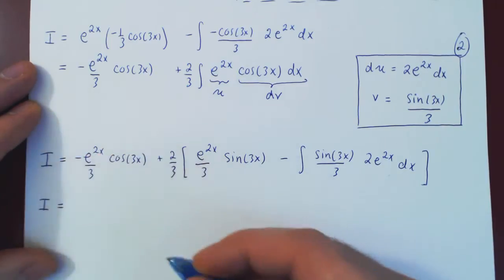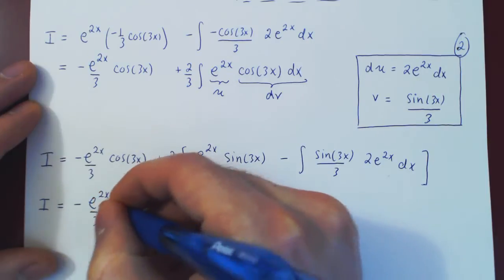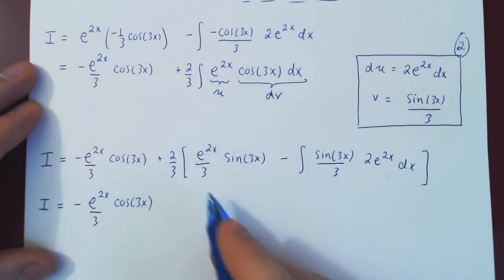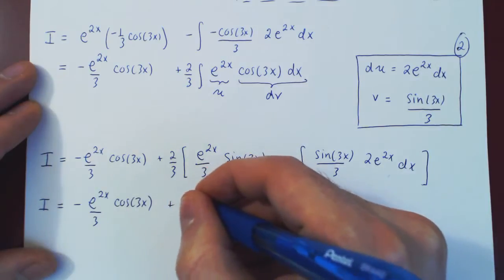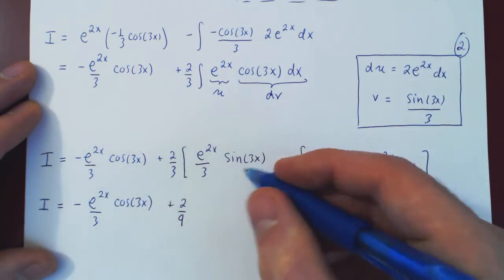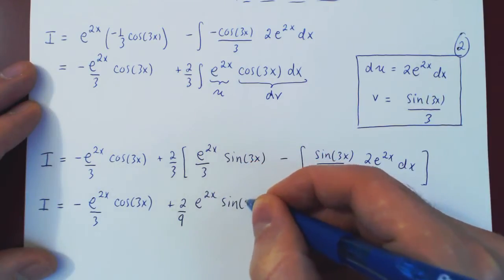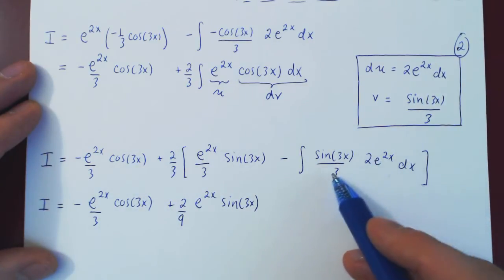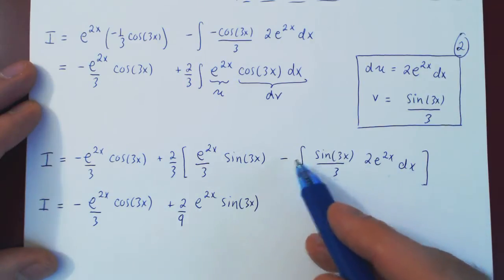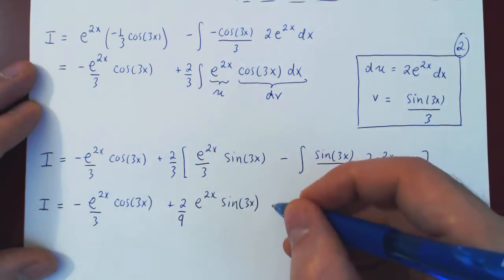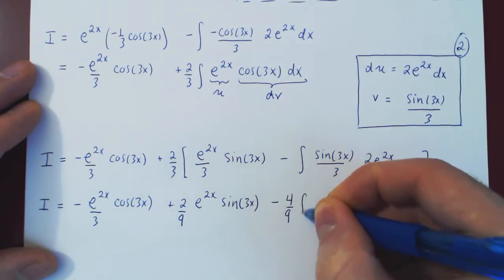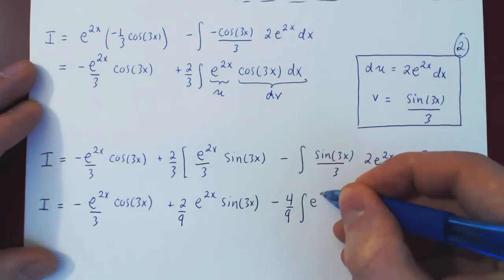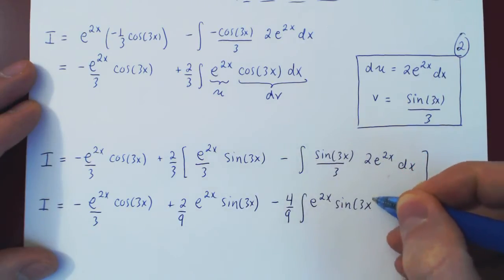Cleaning this up: I equals negative e to the 2x over 3 cosine of 3x, plus 2 over 9 times e to the 2x sine of 3x. The two-thirds also multiplies the remaining integral, giving us negative 4 over 9 times the integral of e to the 2x sine of 3x dx.